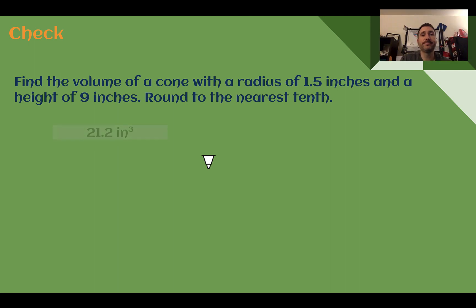Check your answer. You should have found that it was 21.2 cubic inches. We're given a radius of 1.5. So volume equals pi times 1.5 squared times 9. So there's my cylinder divided by 3 since it's a cone. 9 divided by 3 is just 3.